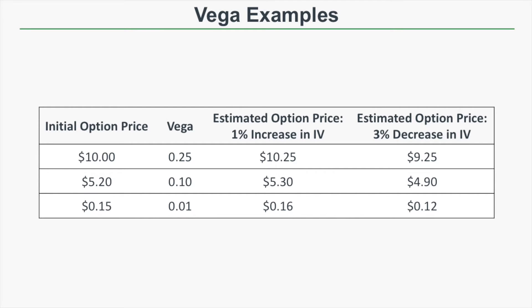Let's go through some basic examples to show how vega is applied. Say we have an option worth $10 and that option's vega is 0.25. That 0.25 represents the option's expected price change with a 1% increase in implied volatility. If implied volatility falls by 1%, the option's price is expected to fall by the amount of its vega. So with a 1% increase, that $10 option increases by 25 cents; with a 3% decrease, the price falls by 75 cents (25 cents × 3).